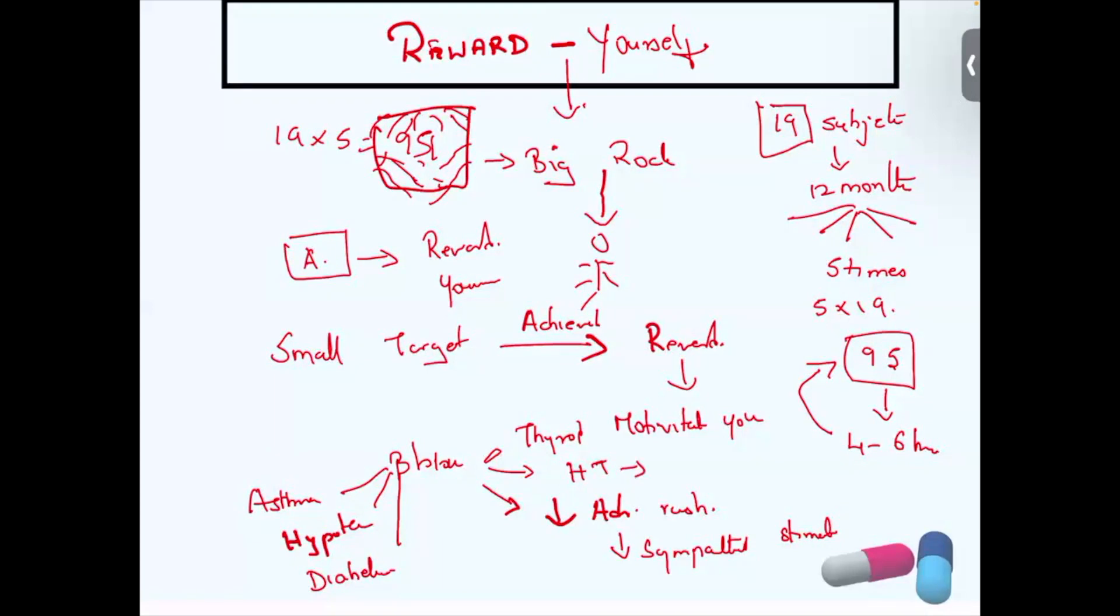But if you see hypertension, there is alpha blocker, beta blocker, calcium channel blocker, like that. Many things are there. So one disease, many drugs. One drug given for many diseases. Like that and all, you have to remember.